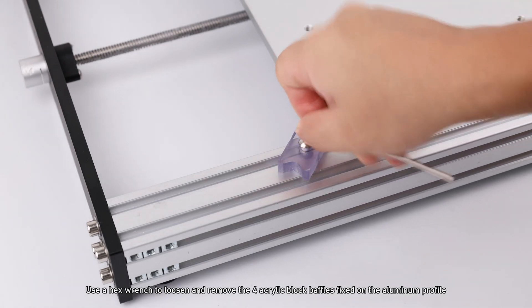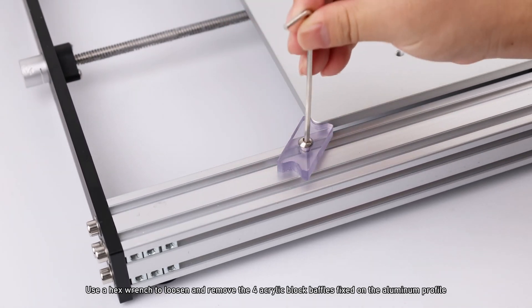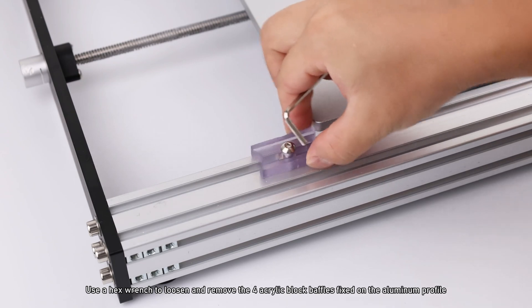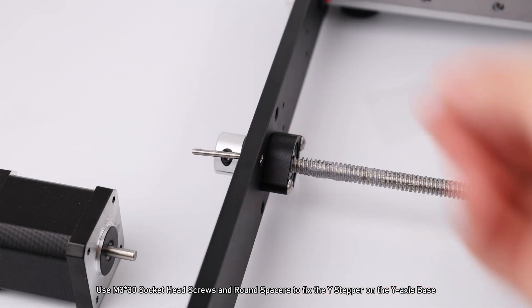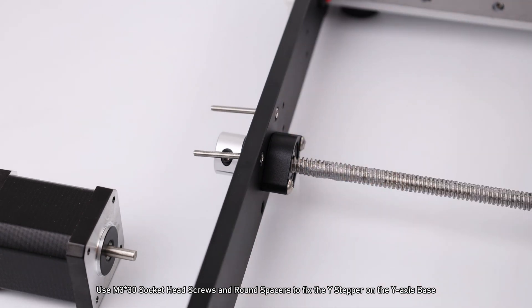Use a hex wrench to loosen and remove the four acrylic block baffles fixed on the aluminum profile. Use M3×30 socket head screws and round spacers to fix the Y stepper on the Y axis base.